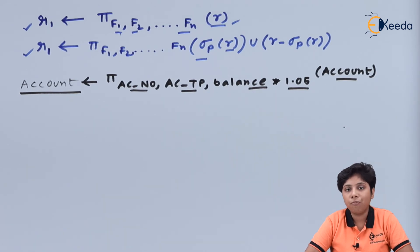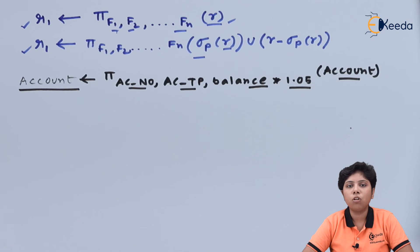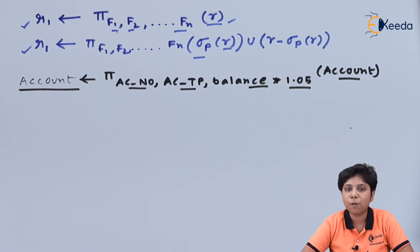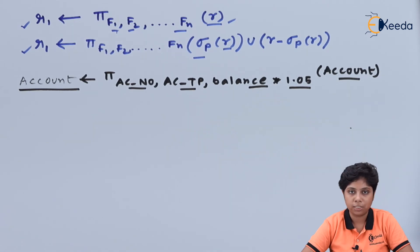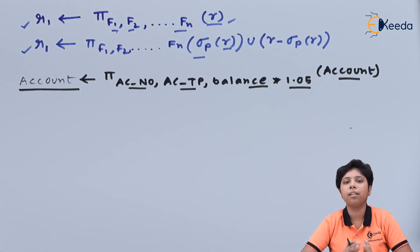Now say we define a predicate on our account relation: if the account balance is greater than twenty thousand, then we give a six percent interest; in all remaining cases we give a five percent interest. To handle this, we need to use a predicate with the selection operation and then update it in the account relation.